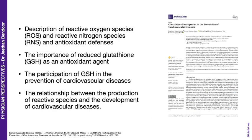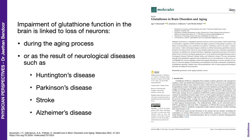There have been many publications on the challenges of glutathione in various diseases. For example, a paper on glutathione's participation in the prevention of cardiovascular diseases discusses reactive oxygen species, ROS and RNS — reactive nitrogen species — and the importance of reduced glutathione as an antioxidant. Another paper addresses impairment of glutathione functions in the brain linked to neuronal loss during aging or neurological diseases like Huntington's disease, Parkinson's disease, stroke and Alzheimer's disease.